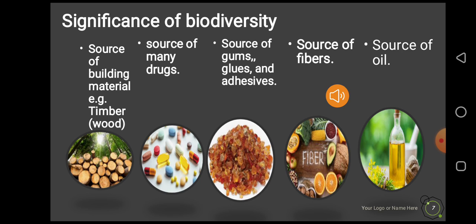Timber, which is a kind of wood used for the purpose of construction and building, is obtained from forests. Many useful herbs used in the preparation of certain drugs are also obtained from plant sources. Biodiversity is also a source of many useful materials like gum, glues, fibers, and oils.